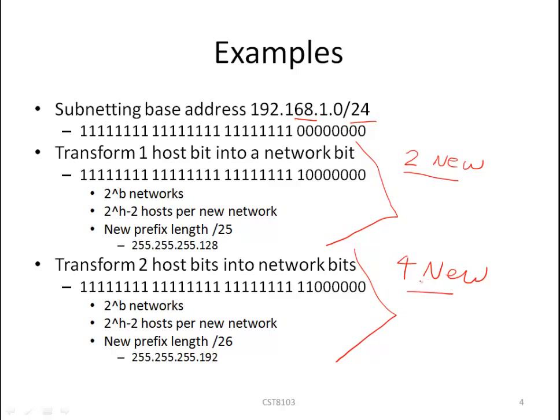So one bit is two blocks, two bits is four new blocks. In the case where we borrow one bit, we've transformed it from a host bit (used to be zero) into a network bit (becomes a one). Our new subnet mask is 128, which is equivalent to a prefix length of 25. Here we've borrowed two host bits. They used to be zeros in our base address, then we've transformed them into ones, into network bits, and the net result is our new mask of 192 with a prefix length of 26.